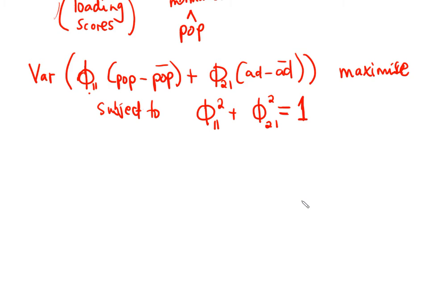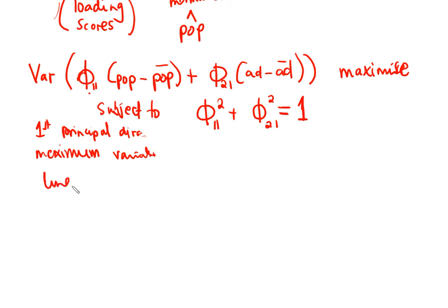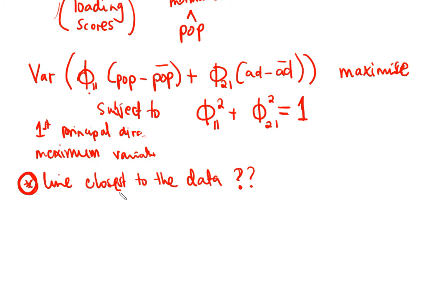If we are going to create many of these Zs, we can do the same thing — we can create Z2, Z3, Z4, Z5. The first principal component direction is the one with the maximum variability. We can also say it is the line closest to the data. This is very important because in PCA, we then ask: what does 'closest to the data' mean? We'll see how we measure closeness to the data in the next video.